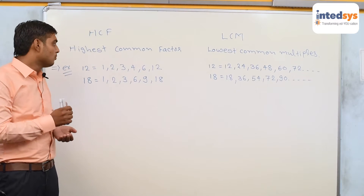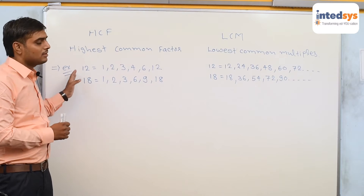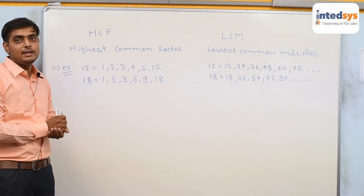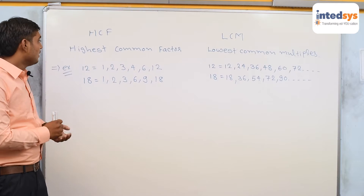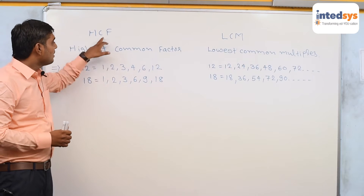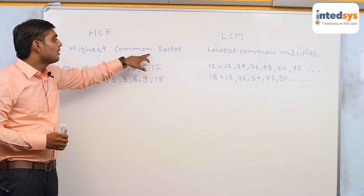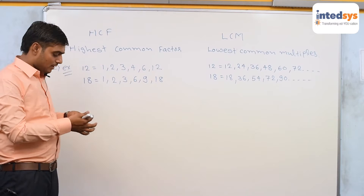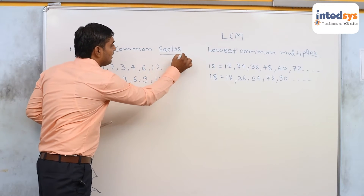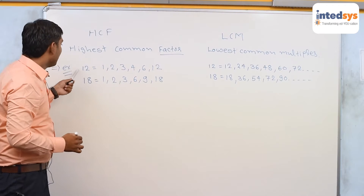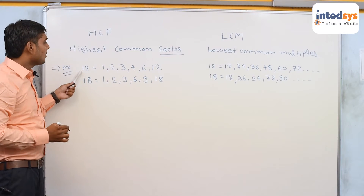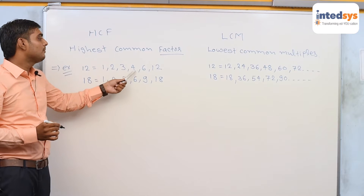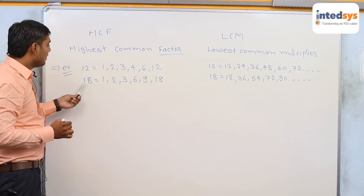We take an example of two numbers, simplest numbers 12 and 18. Now, HCF means highest common factor. The factors of 12 are 1, 2, 3, 4, 6 and 12.